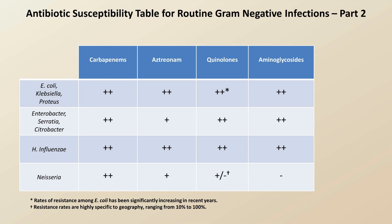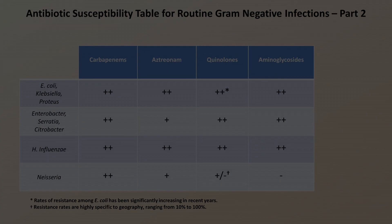Aminoglycosides cover all of these well except Neisseria. Most of the species listed so far don't usually pose a significant treatment challenge, provided adequate source control and host immune function. However, there are a collection of gram-negatives that are classified as highly resistant. That term is variably defined, more so with the gram-negatives than with the gram-positives, as we saw in the last lecture.